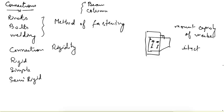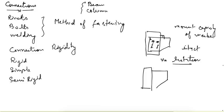The second type is a simple connection. In this case, the moment capacity of the connection is zero — we do not consider the joint to carry any moment, and it acts as a hinge. It cannot carry any moment. The third type is a semi-rigid connection, which carries some moment and allows some rotation.